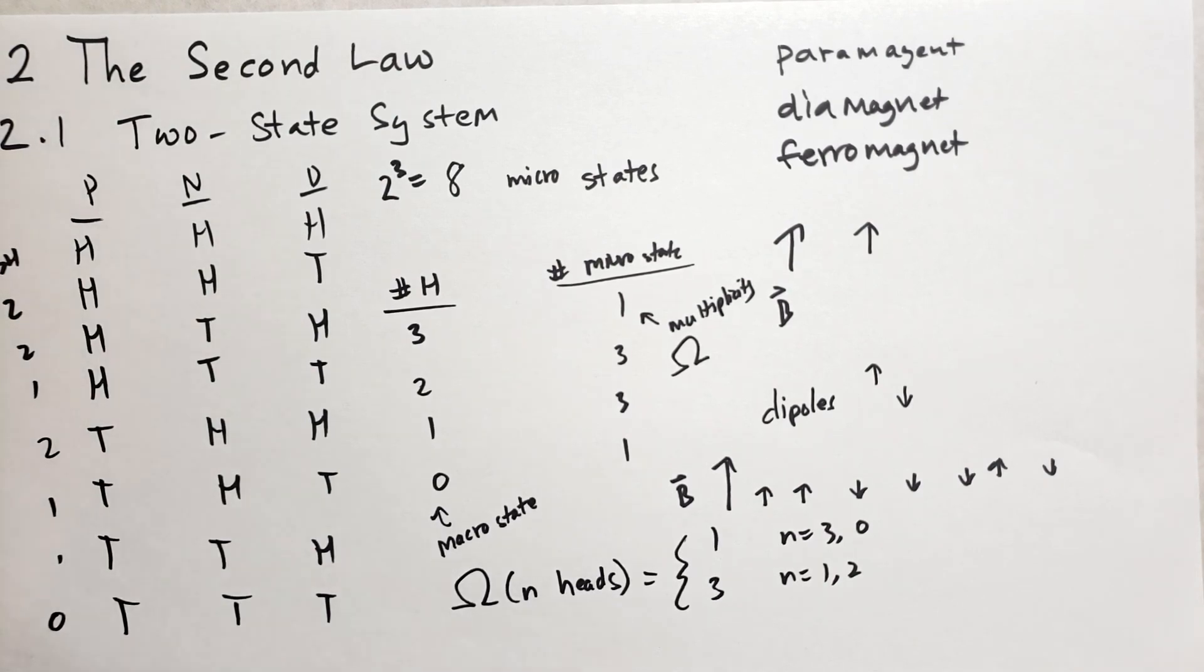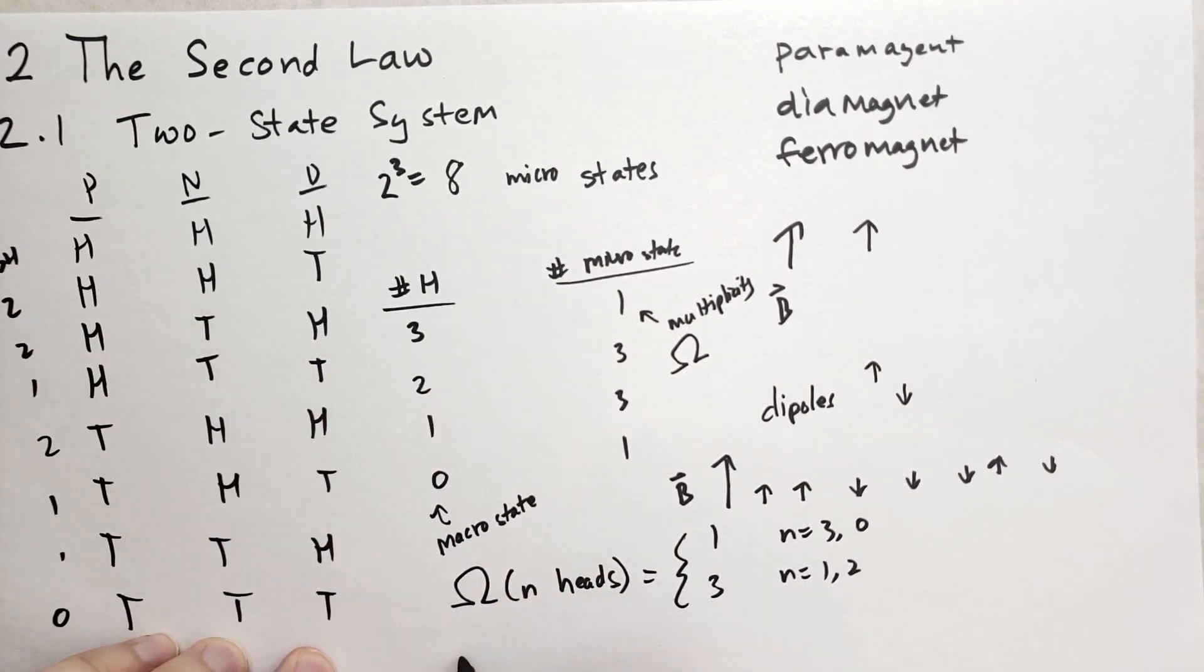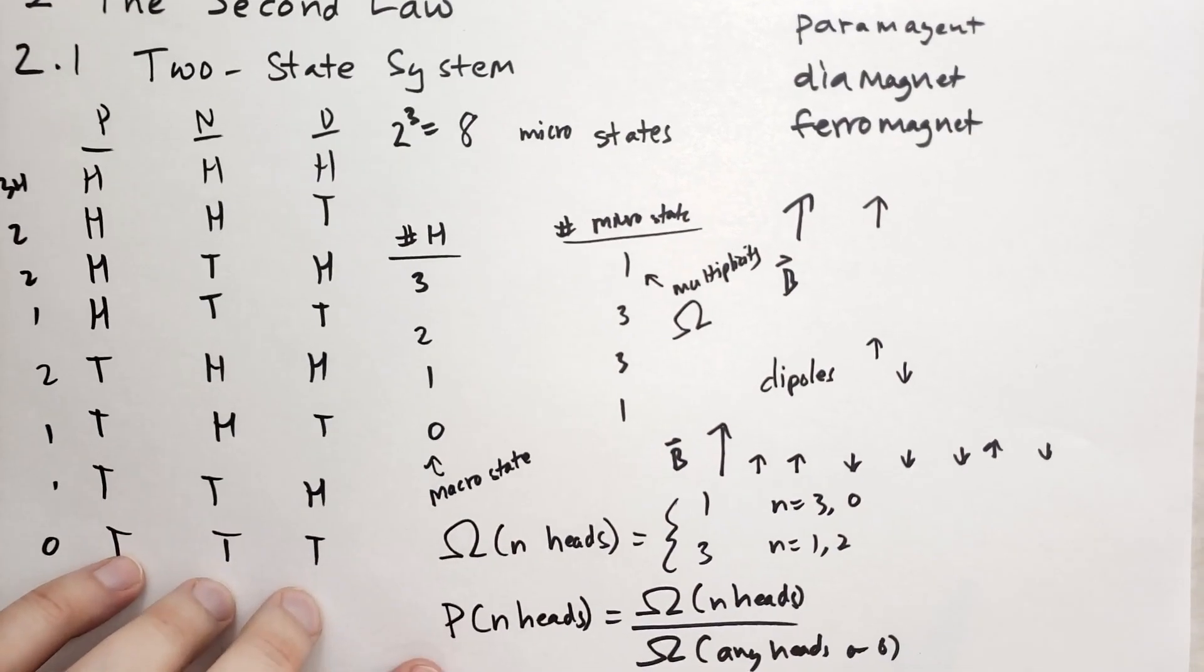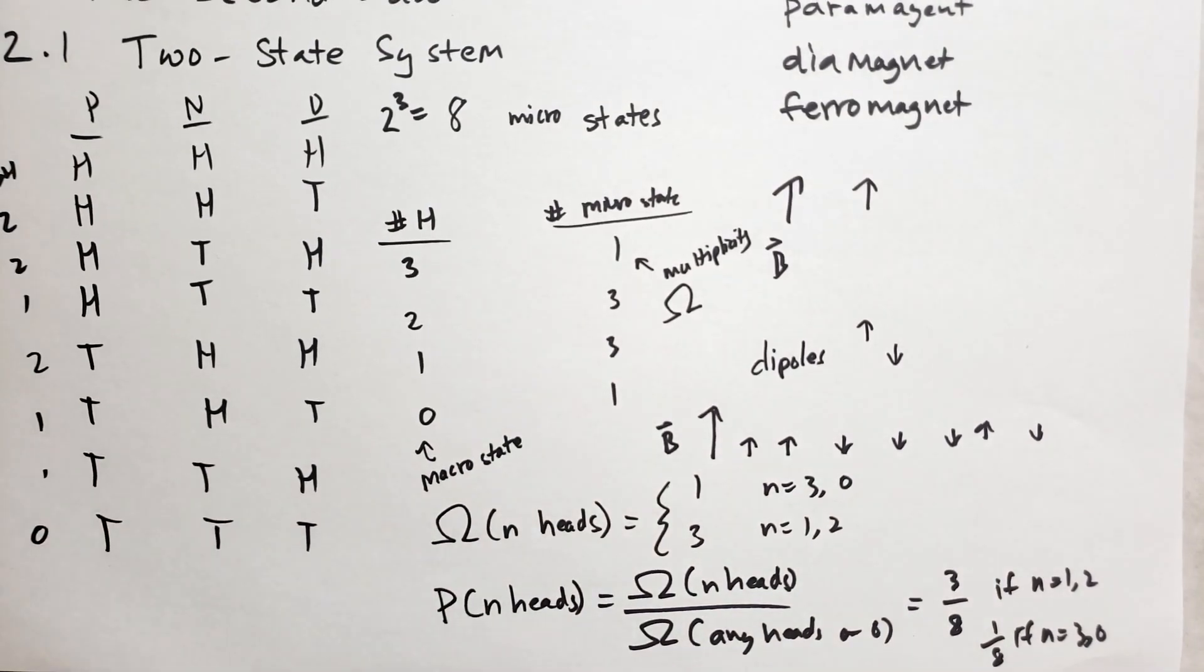We can use this to calculate the probability of getting a certain number of heads. So we can say the probability of n heads is equal to the number, the multiplicity of n heads, divided by the multiplicity of any heads, or zero, which is just basically all of the microstates. And so we'll get basically three-eighths if n is equal to one or two, and we'll get one-eighth if n is equal to three or zero. That's what we're going to get for this case.